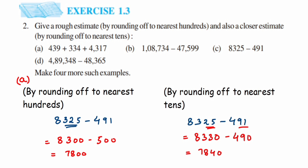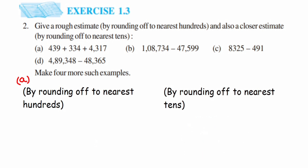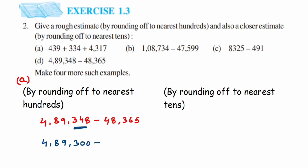The last question is 4,89,348 minus 48,365. Rounding to nearest hundreds: for 348, it lies between 300 and 400 and is closer to 300, so we get 4,89,300. For 365, it lies between 300 and 400 but is closer to 400, so 48,365 becomes 48,400. Subtracting: 4,89,300 − 48,400 = 4,40,900.